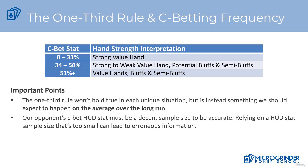Or maybe we have top pair with a very bad kicker — same type of deal. On the flip side, if we're playing against a maniacal, loose aggressive, or tight aggressive opponent and their c-bet stat is 66% of the time — astronomically high — and we flop a moderate strength value hand or top pair with a weak kicker, well, we're not going to be folding to a lot of their c-bets. We're going to be exploitatively calling instead, or even in some spots, potentially raising.